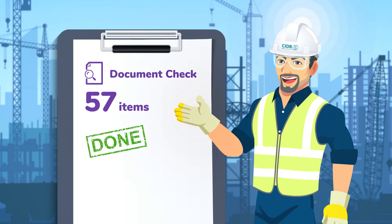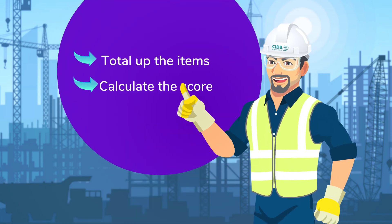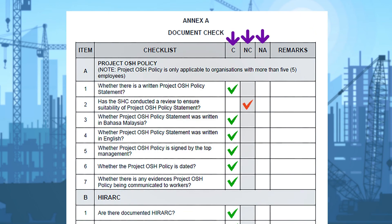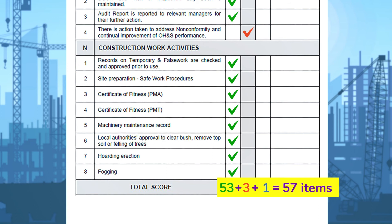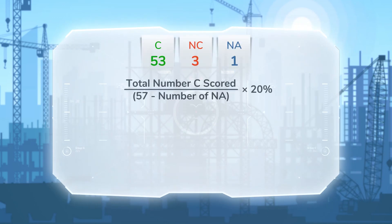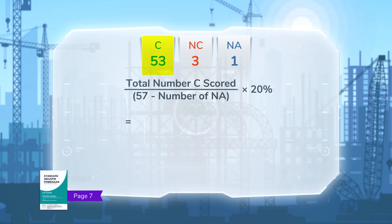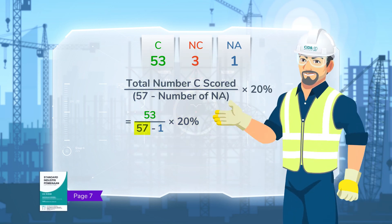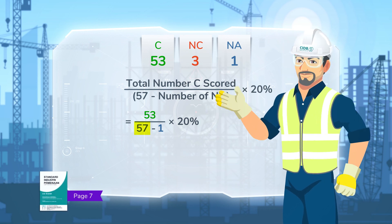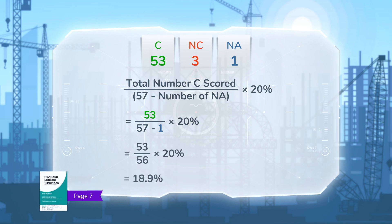Now that you've assessed all 57 items in the document checklist, it's time to total up the items and calculate the score. Count the total of ticks in each column. Document check has a total of 57 items, so double check that the total adds up to 57. Here's the formula to calculate the total SHASIC score for document check, which comes from page 7 of the CIS. Plug in the total number of compliances obtained from the completed checklist, then plug in the total number of non-applicable checklist items. Note that 20% is the weightage assigned to document check, and 57 refers to the total number of items in the document checklist.